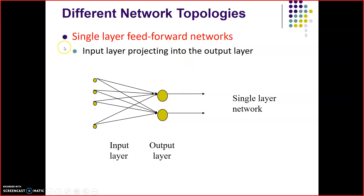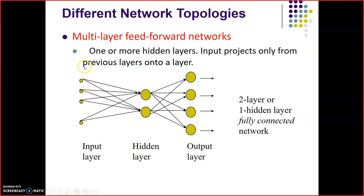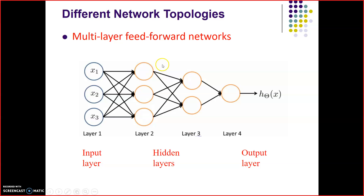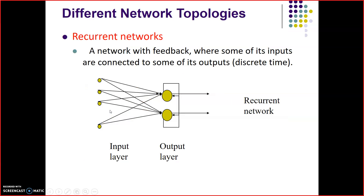There are different network topologies. Single layer feed forward network means one input layer and one output layer — this is called single layer ANN. Then multi-layer ANN has one input layer, one hidden layer, and one output layer. Then multi-layer feed forward network can have more than one hidden layer — layer one is the input layer, layer four is the output layer, and layers two and three are hidden layers. Recurrent network has feedback where some of the outputs are connected back to the input.